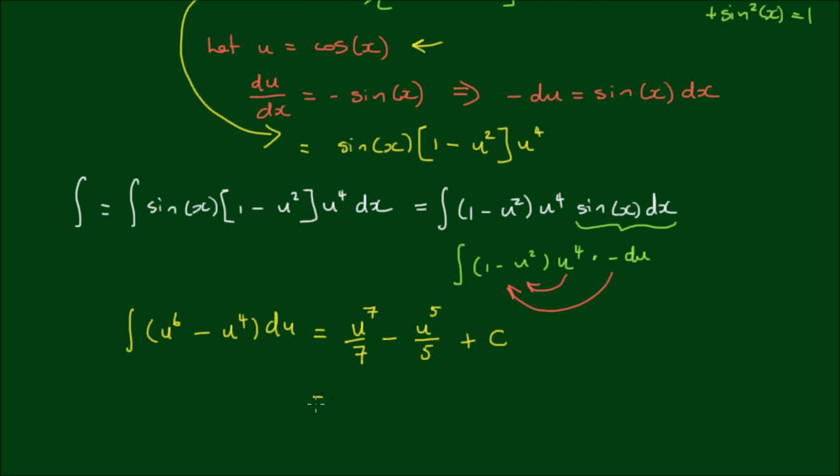And of course, u is equal to the cosine of x. So I get cos⁷(x)/7 minus cos⁵(x)/5 plus the integration constant, c.